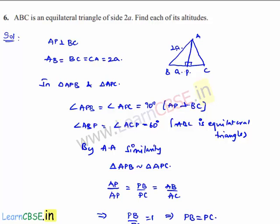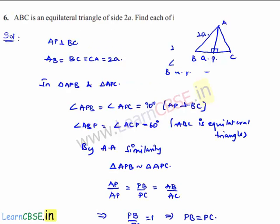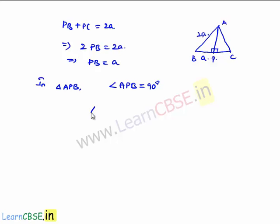If we consider in right triangle APB, angle APB is equal to 90 degrees. So now we can apply the Pythagoras theorem that AB square is equal to AP square plus BP square, which implies AB square, which is nothing but 2a whole square.